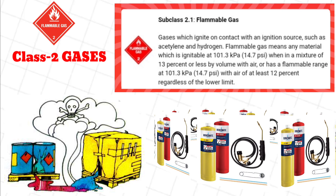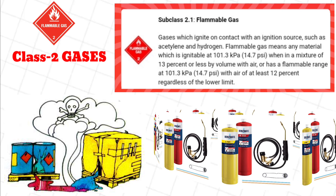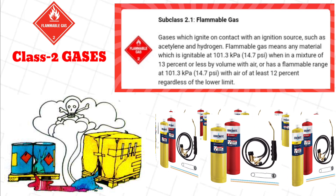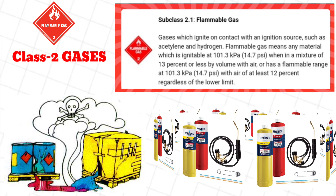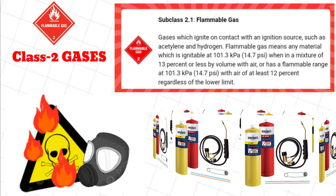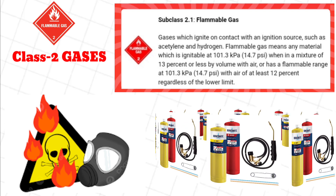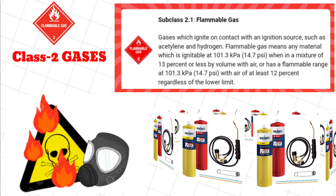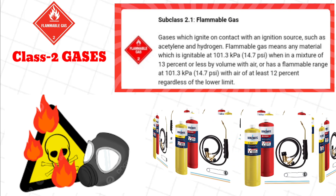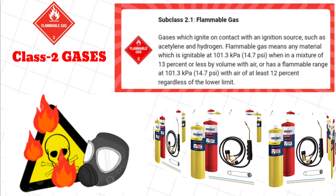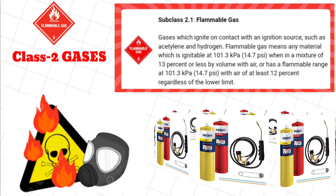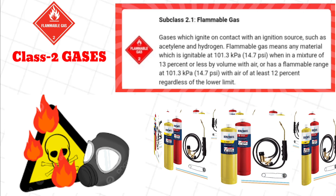Flammable gas means any material which is ignitable at 101.3 kilopascals (14.7 pounds per square inch) when in a mixture of 13% or less by volume with air, or has a flammable range at 101.3 kilopascals (14.7 pounds per square inch) with air of at least 12% regardless of the lower limit.